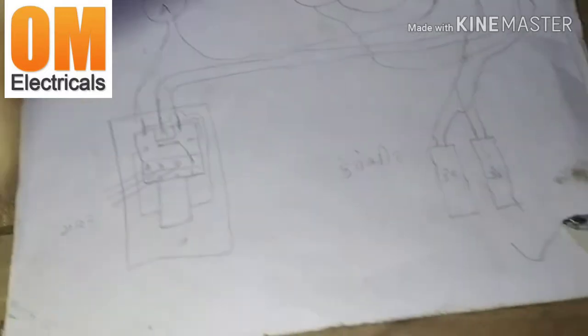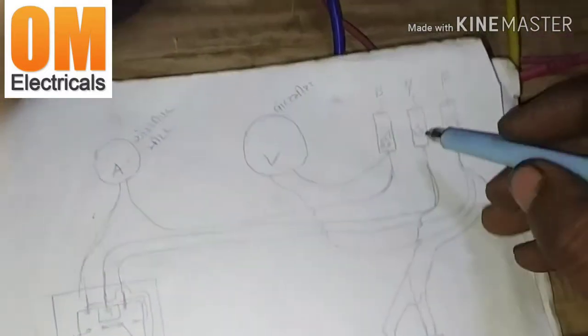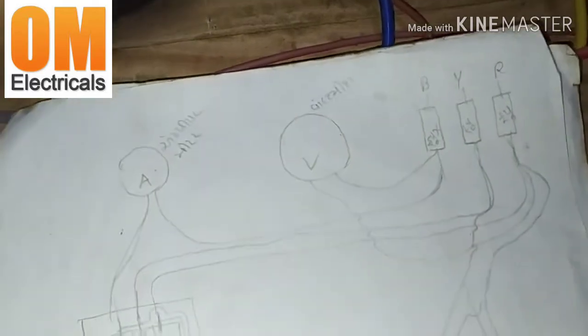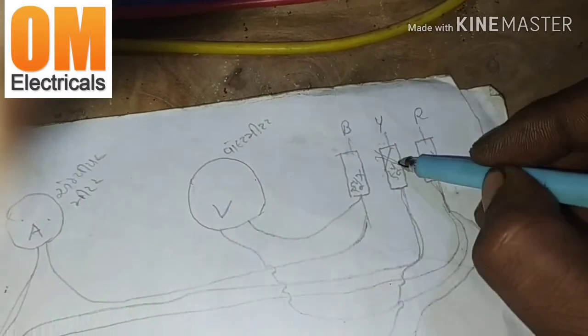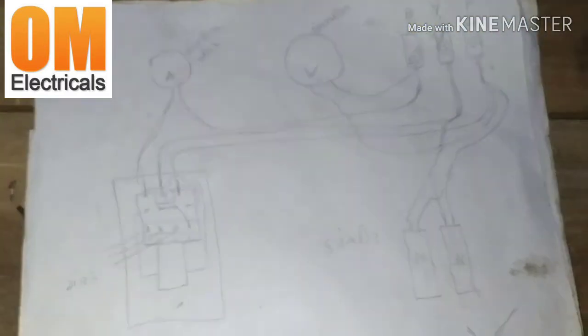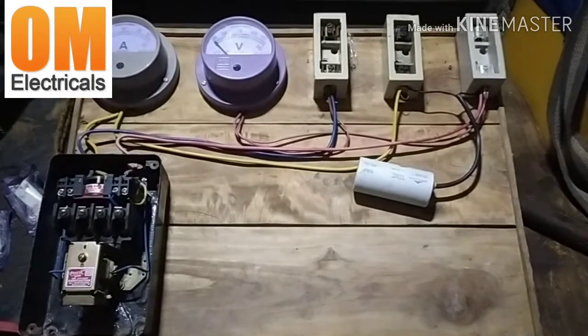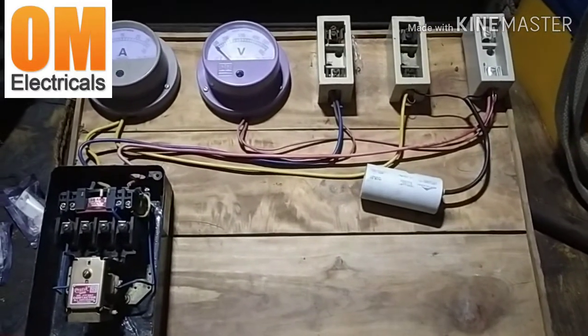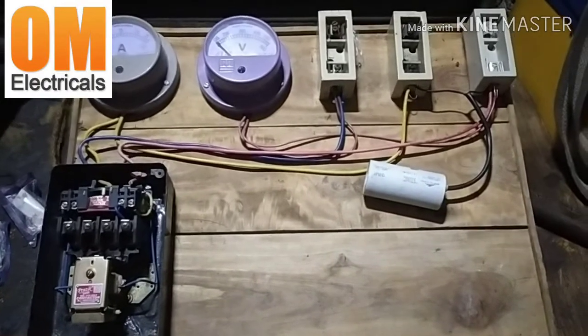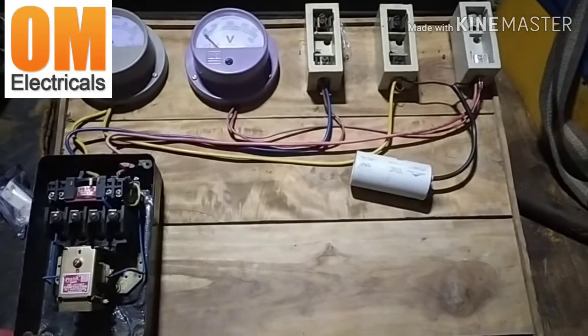So to start two-phase, you can see the data from the digital diagram. This is the Stater, volt, RPM meter, voltmeter, and fuse.